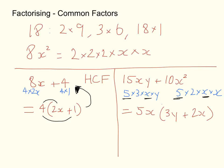Again, what goes inside my brackets here is the remaining factors from back up here. So I've got 5x times 3y gives me 15xy, and then 5x times 2x gives me 10x squared.